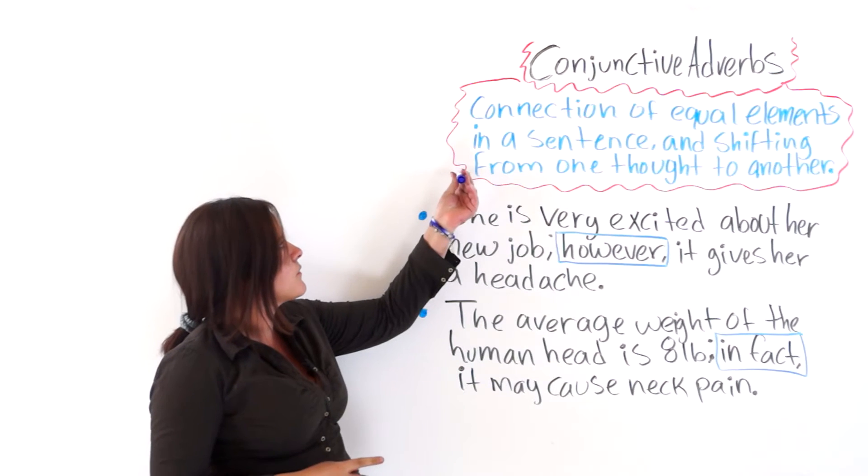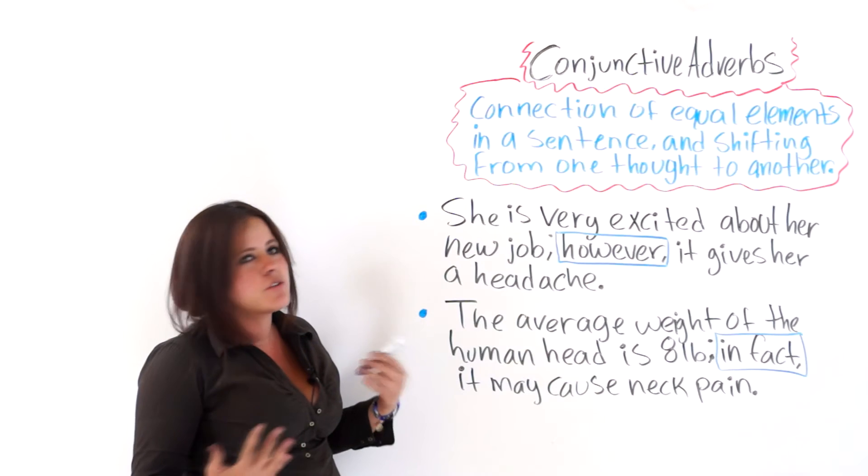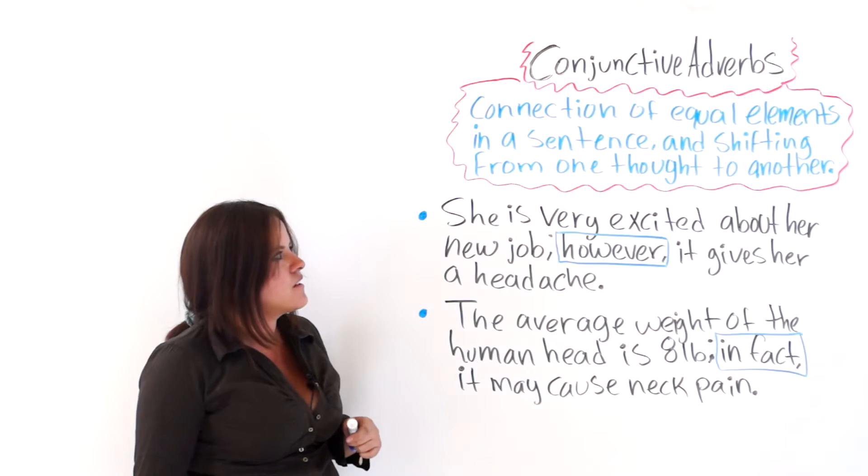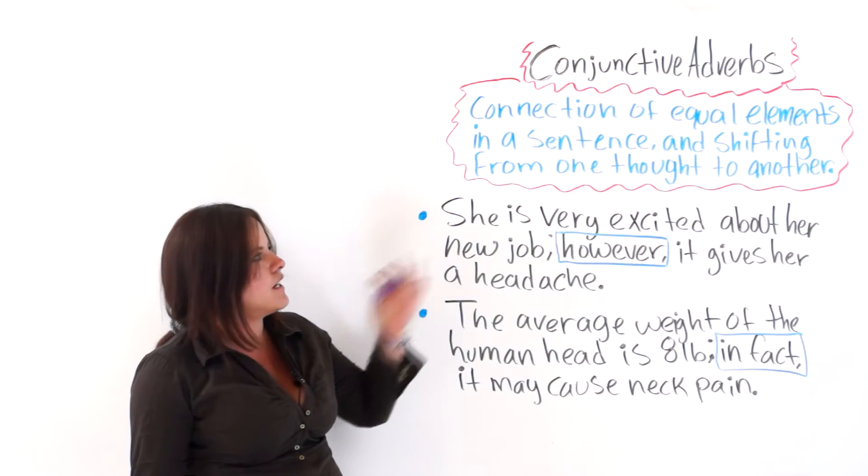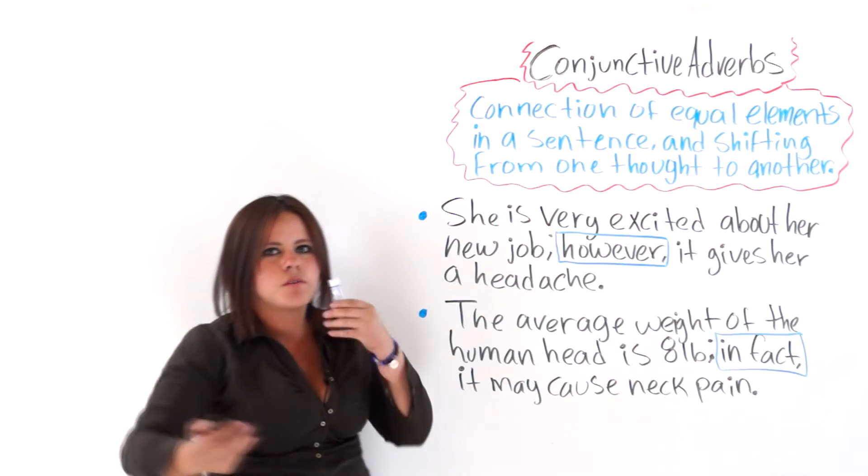As you can see, I wrote a note here for you that says that conjunctive adverbs work through the connection of equal elements in a sentence and shifting from one thought to another. So we use conjunctive adverbs to connect equal elements in a sentence or to shift from one thought to another.